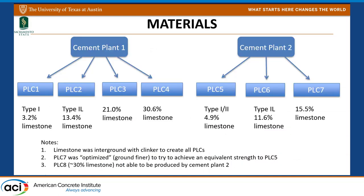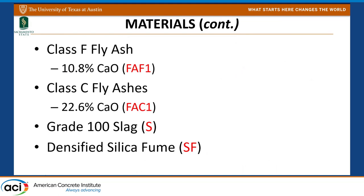We got two cement plants in the state of Texas to make custom cements for us. They were already making Type IL cement — PLC2 and PLC6. We asked them to put more limestone in: cement plant one produced cements with 21 and 30 percent limestone, and PLC7 from the other plant had about 50 percent limestone, and they ground it very finely making it very reactive. We also used Class F and Class C fly ashes, Grade 100 slag, and silica fume.